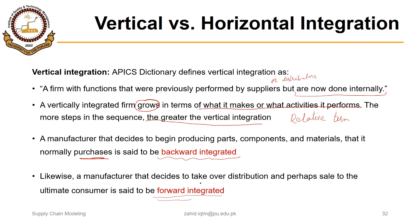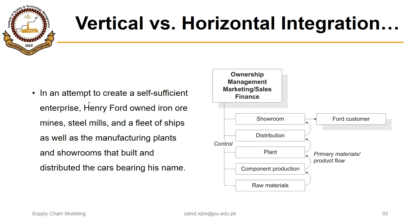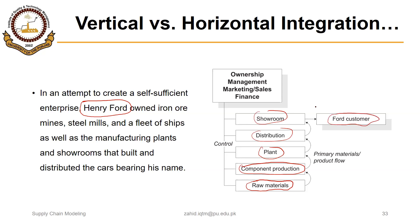So we have backward integration and forward integration. A classical example of vertical integration is the Ford Motor Company in the time of Henry Ford. Ford had its own iron ore mines where iron was extracted and steel was made. It had steel-making plants, component production plants, car manufacturing plants, distribution centers, and showrooms. Right from raw material extraction, making of alloys, component production, car production, distribution, to showroom — everything was owned by Ford Motor Company before the product reached the customer's hands.